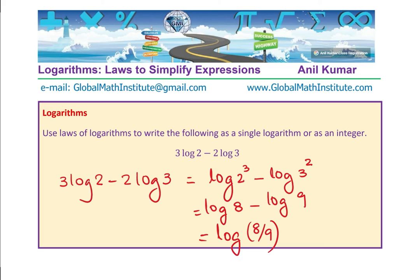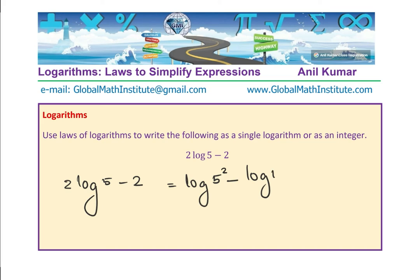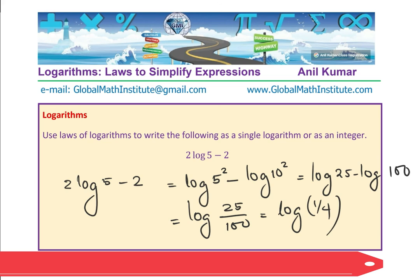These simple questions will help you get the concepts, and then you will be able to solve and simplify expressions based on the laws of logarithms. The last question: 2 log base 10 of 5 minus 2. Rewriting: log base 10 of 5² minus log base 10 of 10², which is log of 25 minus log of 100, giving log of 25 over 100, which is log of 1 over 4.